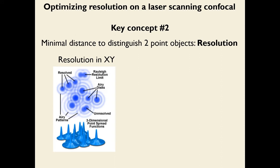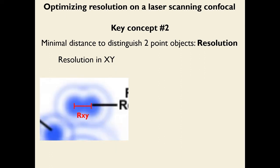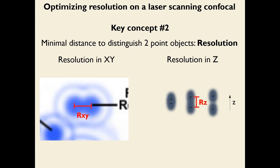Third, optimal sampling: in X and Y, the pixel size is the sampling unit. Too large a pixel loses detail that the optics could resolve; too small a pixel is overkill — empty magnification that wastes time and bleaches unnecessarily. The optimal pixel size is approximately the XY resolution divided by 2–3, following the Nyquist criterion. In Z, the sampling unit is the spacing between optical slices; similarly, the optimal Z step size is the Z resolution divided by roughly 3.